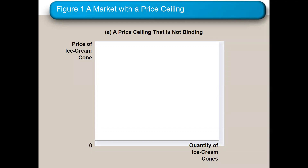A price floor is the minimum price a good can be sold at. For that to be binding, it has to be above the equilibrium.